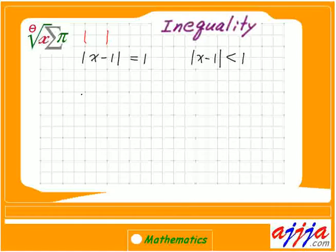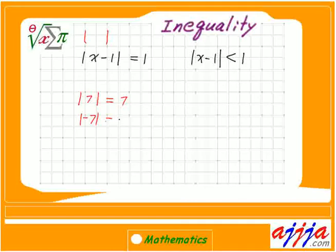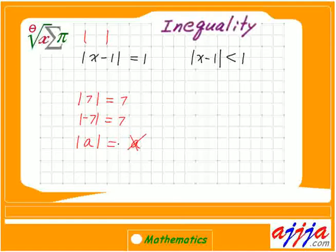Okay, so let's talk about this. You have an absolute value sign — let's say 7. That's right, the absolute value of 7 is 7. What about negative 7? Also 7. What about A? You have to be careful. This is not the right answer just to say A.